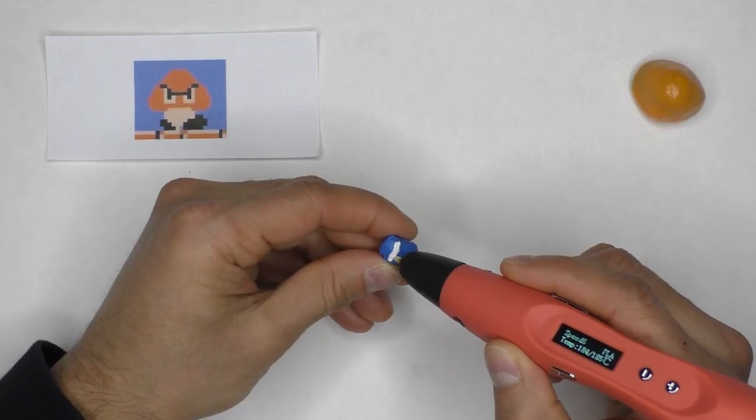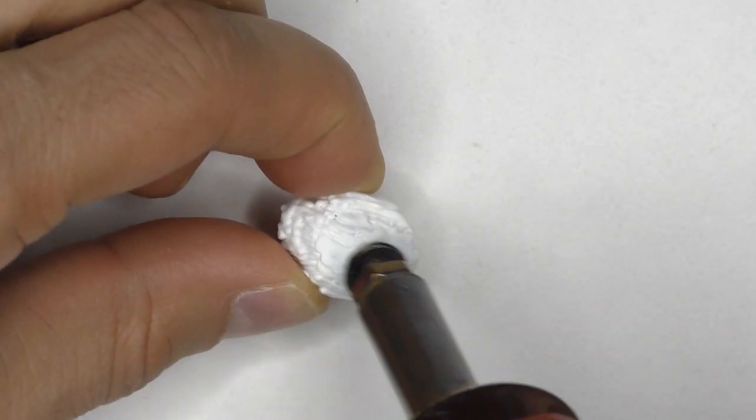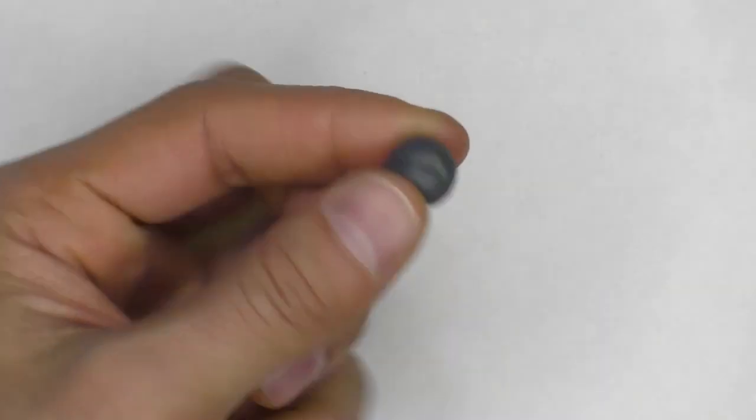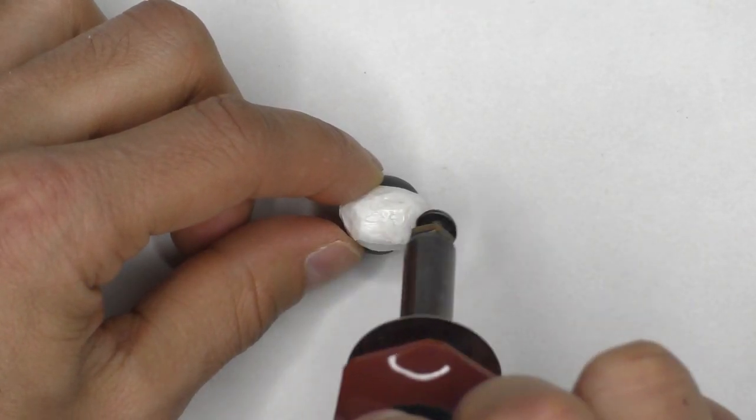The body of the Goomba comes next and it follows a very similar workflow, so we'll move through that pretty quickly. One really handy trick when 3D penning smaller objects is to use some tack adhesive putty to hold them in place.